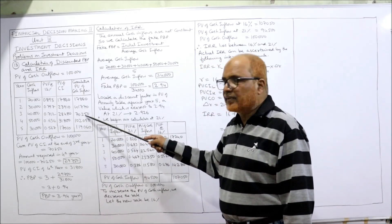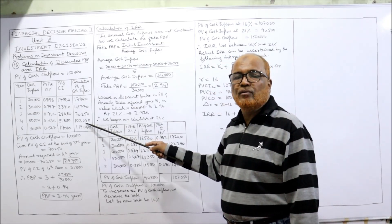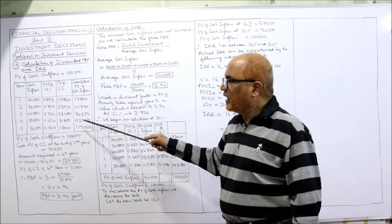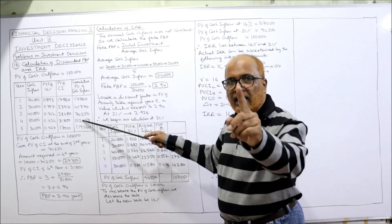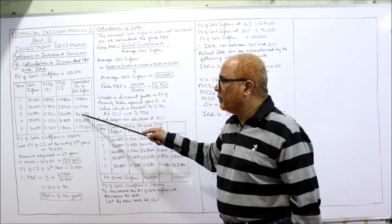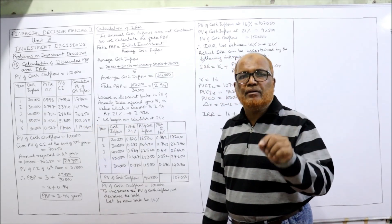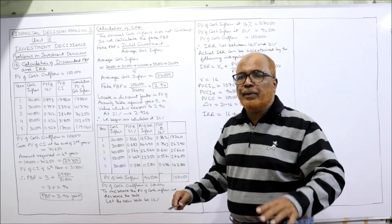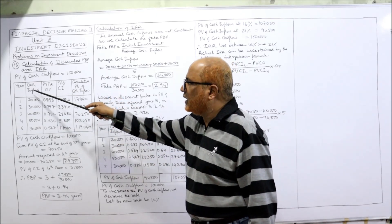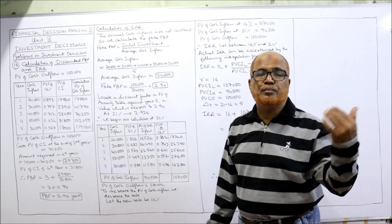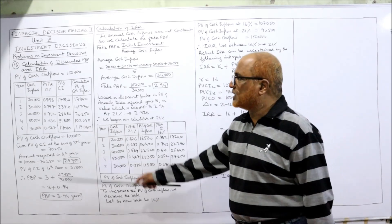We don't require 1,02,050 — we require exactly 1,00,000. So 1,00,000 lies between 70,250 and 1,02,050, meaning the discounted PBP lies between year 3 and year 4. For normal payback period, no PV factors are needed — only cumulative cash inflows, as explained in the last video. But here we use discounted cash inflows.